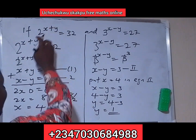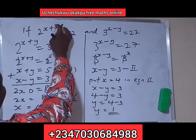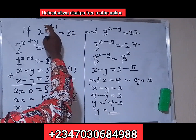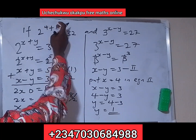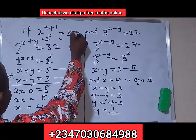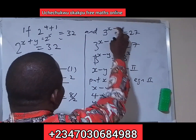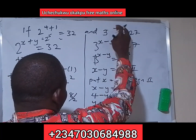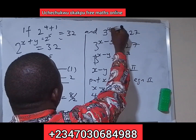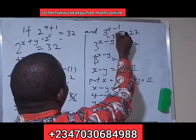Now let's verify our answers. With x equals 4 and y equals 1, x plus y gives 4 plus 1 equals 5, so 2 raised to power 5 equals 32 — correct. And x minus y gives 4 minus 1 equals 3, so 3 raised to power 3 equals 27 — correct. We have shown that our answers are correct.